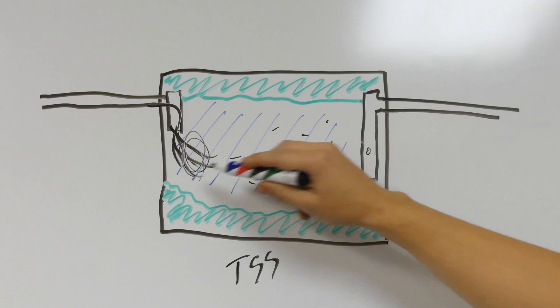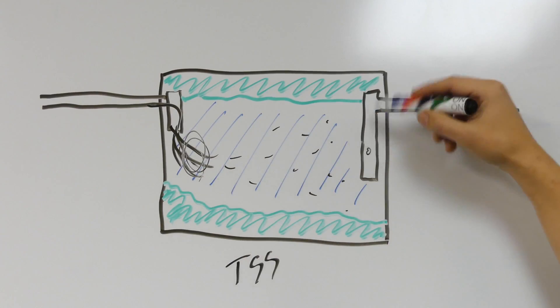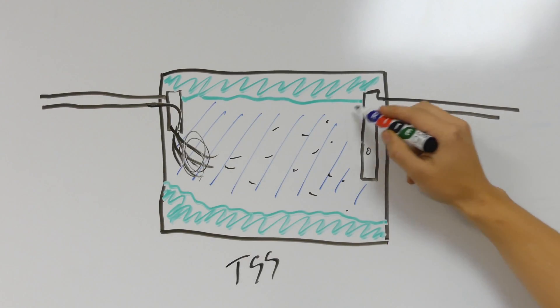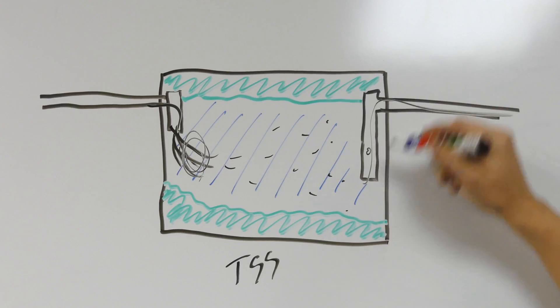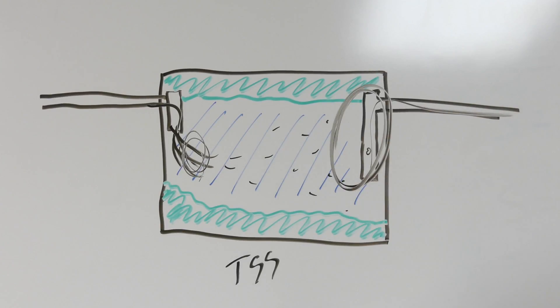Ideally, the more time, more space, and less movement of the water, the less total suspended solids are going to go out to the drain field. And that's where our effluent filter comes into play. So let's talk a little bit more about effluent filters right now.